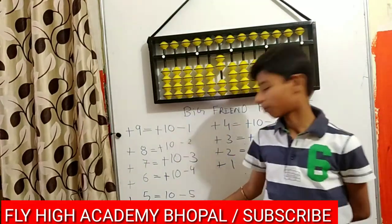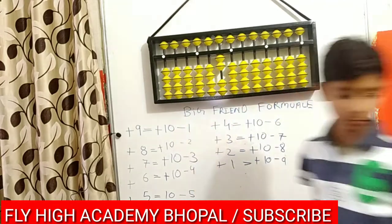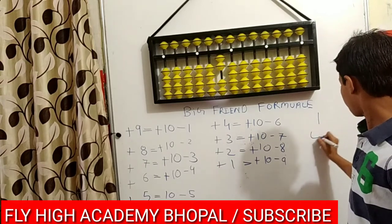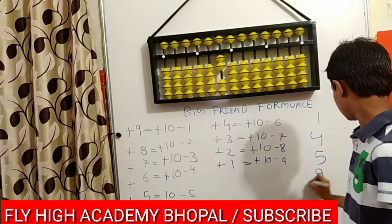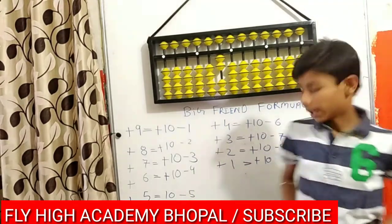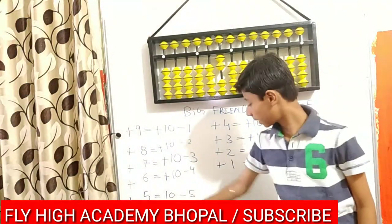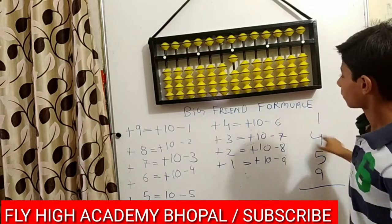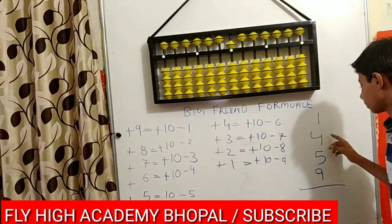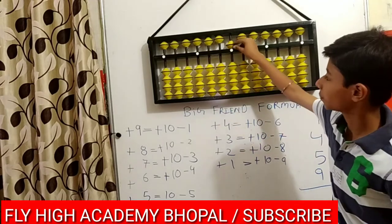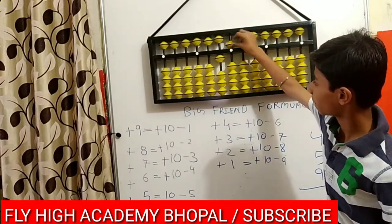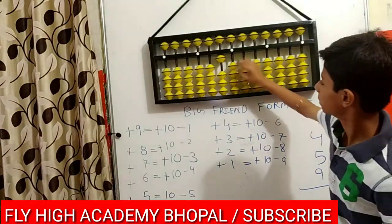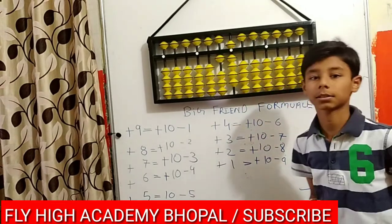Moving forward to plus 5 formula, that is equal to plus 10 minus 5. The question is plus 1, plus 4, plus 5, and plus 9. So here plus 5: plus 10 and minus 5. So 1 plus 4, and now plus 5, so 5 plus 5 equals to 10 minus 5. That is the formula of plus 5. And plus 9, so the answer is 19.